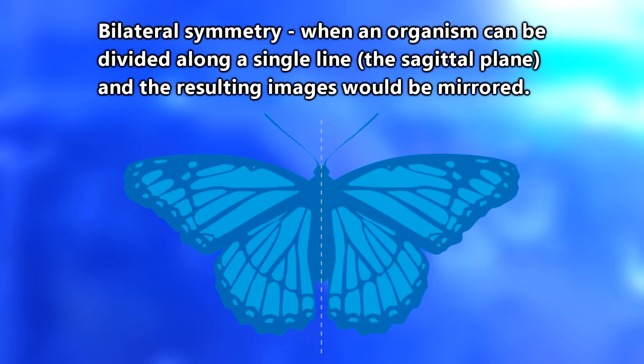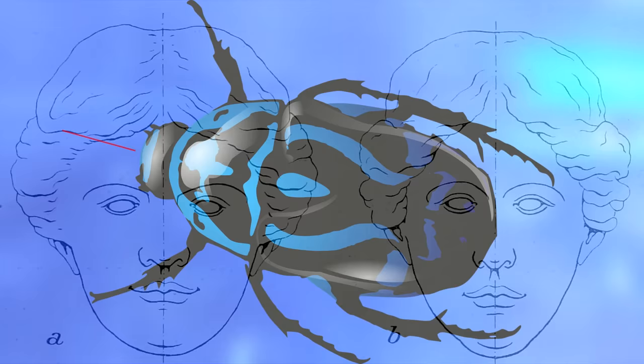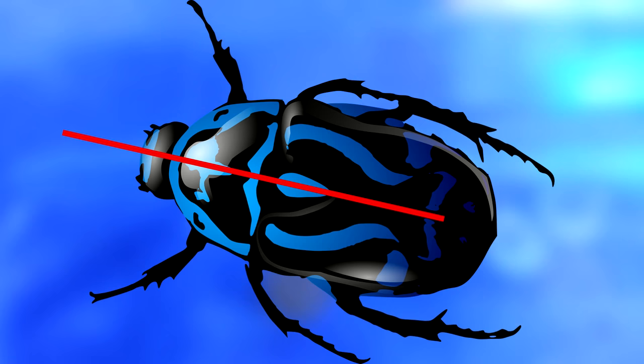Flatworms have bilateral symmetry, and it's been suggested that they may be the oldest living ancestors to all bilaterally symmetric animals — that actually includes us, since we have bilateral symmetry. What this means is that if you cut a bilaterally symmetrical organism in half, both pieces would look the same except reversed. It's also called mirror symmetry.